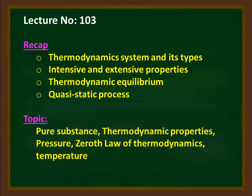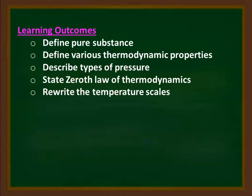Here in the third lecture, we discuss pure substance — we defined the pure substance and various thermodynamic properties, pressure and its measurement. We defined the zeroth law of thermodynamics and will talk about temperature. The learning outcome: at the end of the lecture, students will be able to define pure substance, define various thermodynamic properties, describe types of pressure, state the zeroth law of thermodynamics, and rewrite the temperature scale.